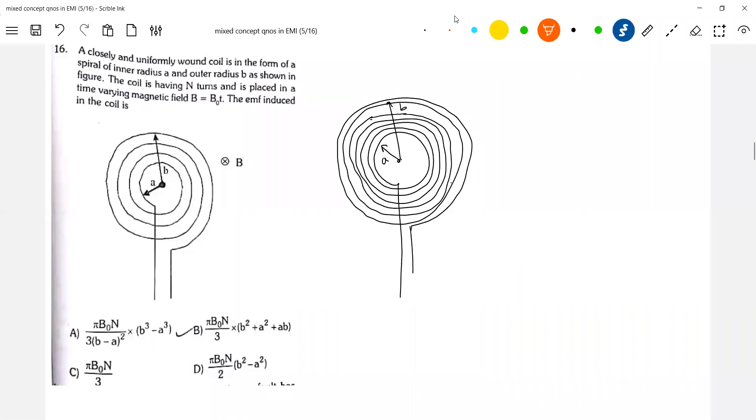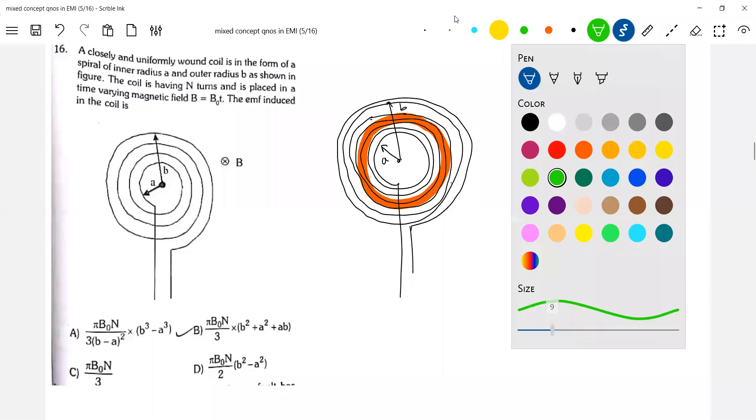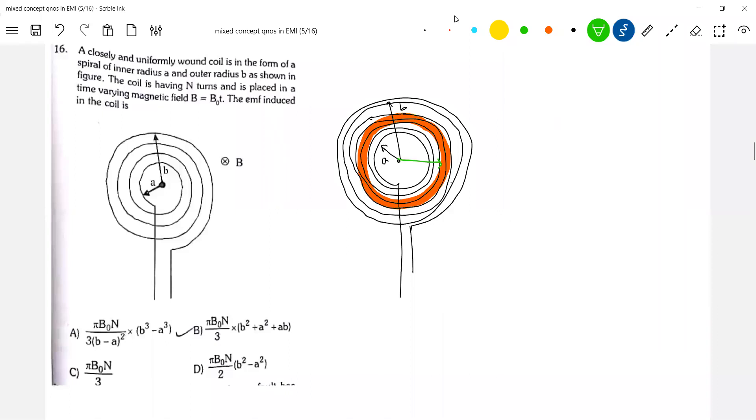I'll assume a strip of width dr. n number of turns are there in a width B-A. So, therefore this will be n number of turns per width B-A should be equal to dN by dr. So, dN is equal to n/(B-A) into dr. And then, first what is EMF induced in this strip will calculate, or flux linking this strip, dΦ.